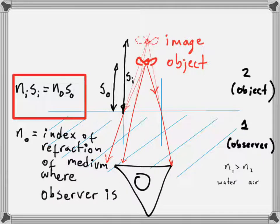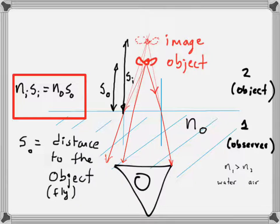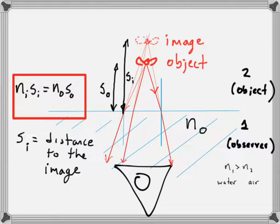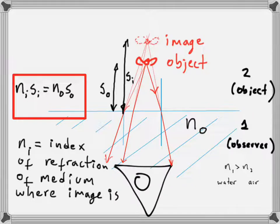The equation is: n_i times s_i equals n_o times s_o. Here n_o is the index of refraction of the medium where the observer is — in the example with the person in water and the fly above, n_o is the index of water. s_o is the distance to the object, s_i is the distance to the image, and n_i is the index of refraction of the medium where the image is.